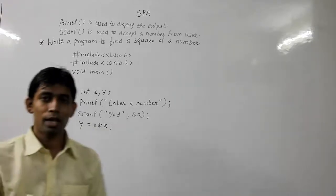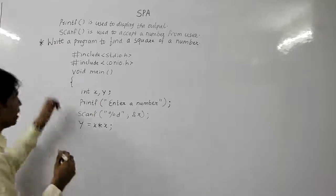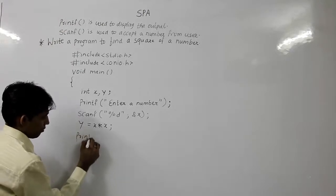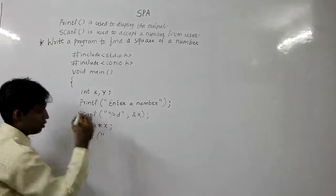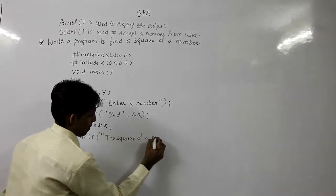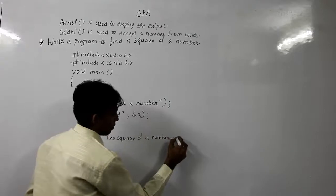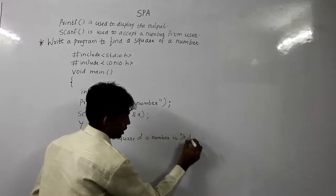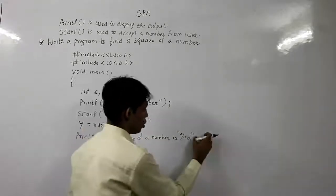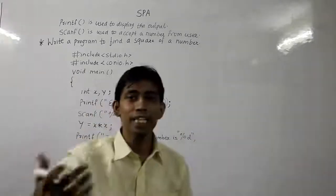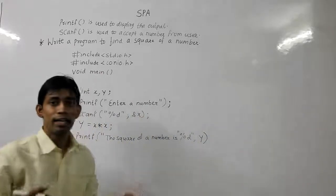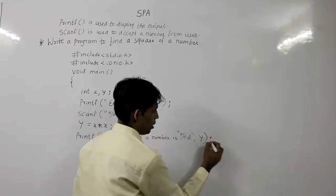Now, computer has done the calculation. I just need to print this. So, again, for printing, displaying, I need to use printf. Straightforward. Printf. I will write it in inverted commas. The square of a number is. Again, I will write %d. So that, it comes to know, computer, that he has to print an integer. Percentage, %d stands for an integer. And, he will print the value that is there in y. Again, a semicolon.